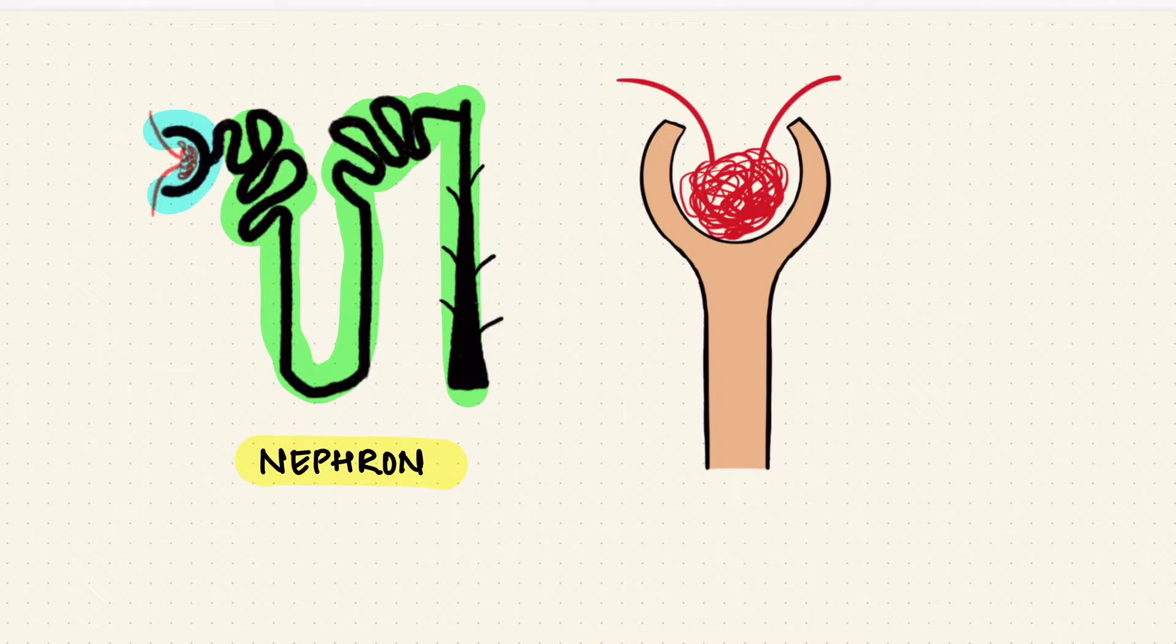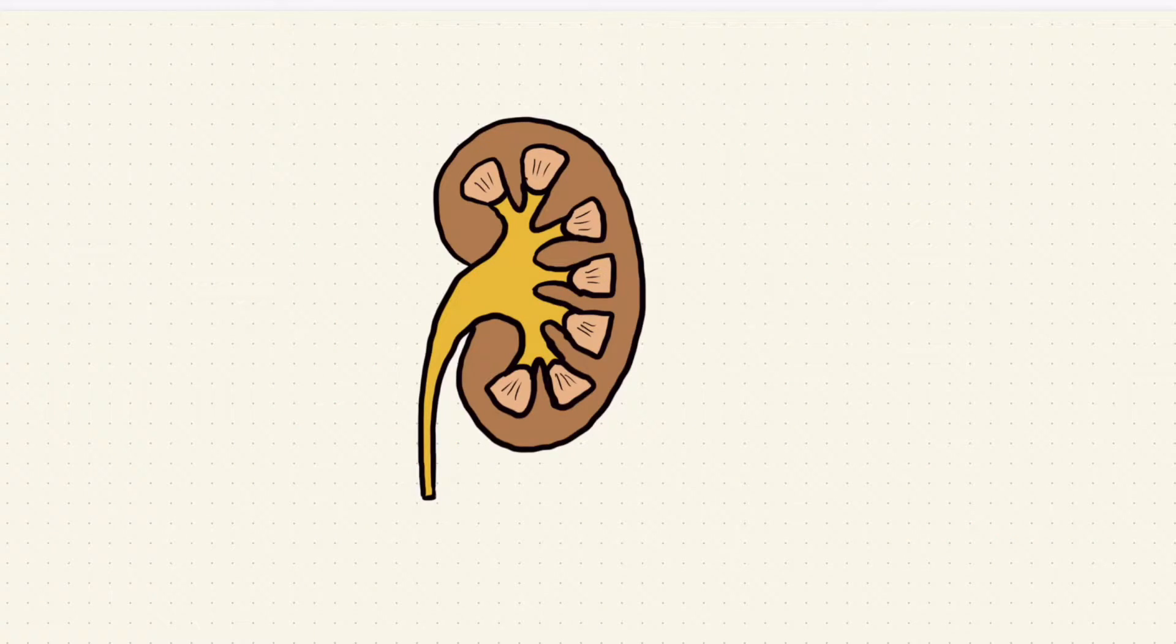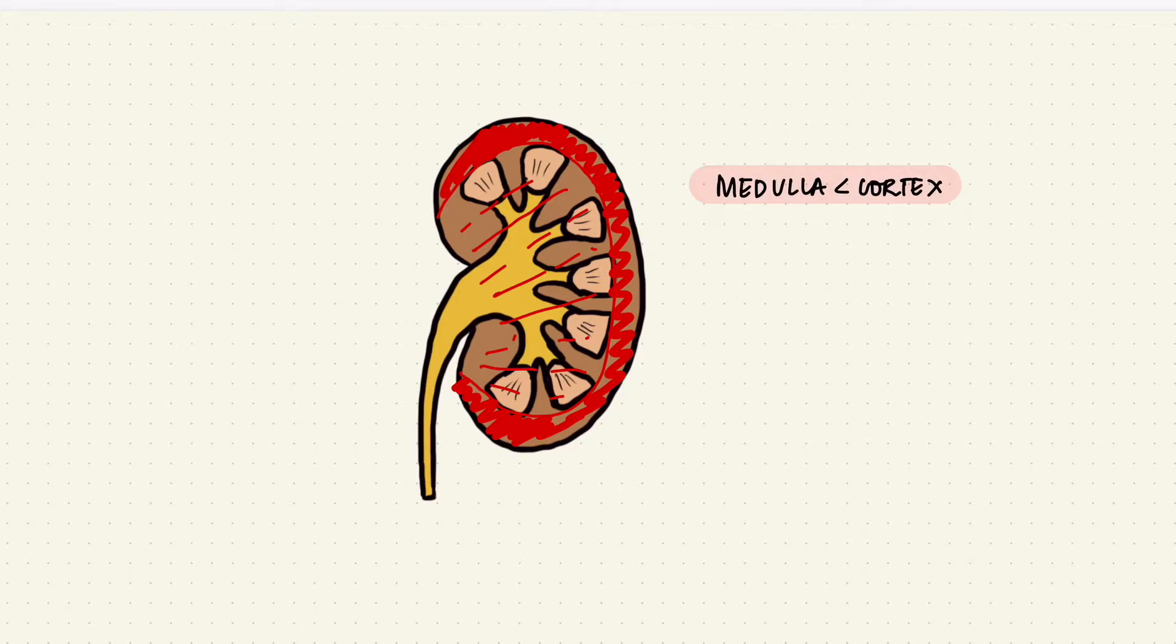The glomerulus is encased in a dilated portion of the tubule called the Bowman's capsule. Blood from the glomerulus exits via the efferent arteriole and that goes to form the peritubular capillaries which finally drains into the venous outflow tracts. Even though the kidney gets a lot of blood, the medulla gets lesser flow than the cortex making it more vulnerable to ischemia.